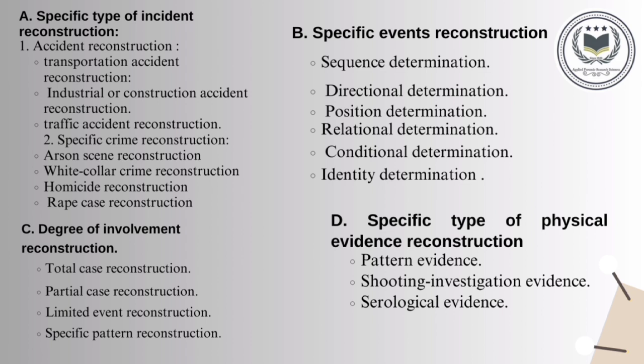The fourth classification is specific type of physical evidence reconstruction, which includes pattern evidences — examples being shoe print, footprint, and tile print reconstruction. The second type is shooting investigation evidences: in gunshot cases, this reconstruction allows us to determine gun ranges and the position of the guns. The third type is serology evidences, where we examine blood spatters and blood pattern reconstruction.